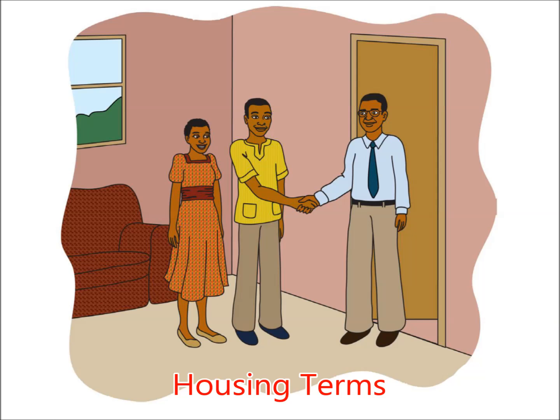Housing terms. A tenant is the person or persons paying money to live in the apartment or house. You are a tenant. A landlord is the person who owns the apartment or house, rents the space to you, and is in charge of the building.